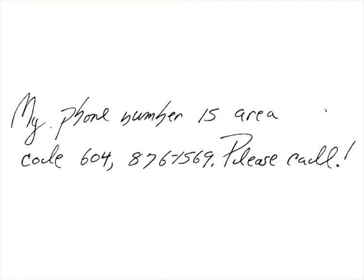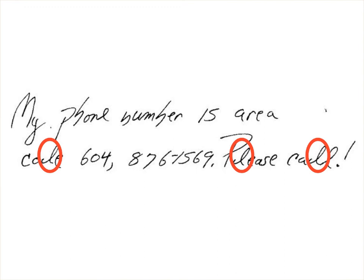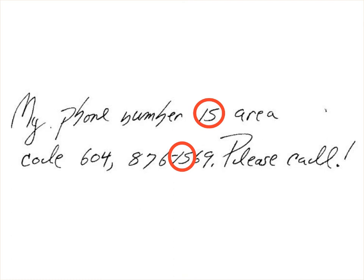Here's another one. Consider this note. I've primed you a bit about what to look for with the previous example of context effects, but let's look at how context effects are evident here. Did you notice that, in the first line, the H in the word 'phone' and the B in the word 'number' are the same shape? Did you notice that, in the second line, the D in the word 'code' is the same shape as the L in the words 'please' and 'call'? Finally, did you notice that the word 'is' in the first line is the same shape as the number 15 in the second line? If you didn't, don't worry about it — context effects predispose you to see the word 'is' in the first line and a 15 in the second line, in the middle of a phone number.